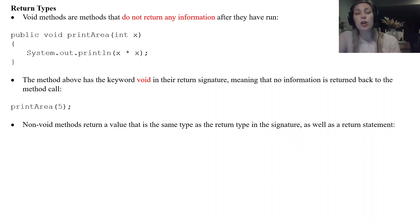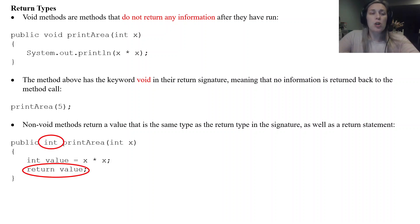Non-void methods are going to return a value that is the same type as whatever the return type is in the signature. So not only will you have a return type but you also are going to have a return statement. Okay so here's the print area method modified a little bit for that. So we have public int print area X. Okay so now we have int as our return type.